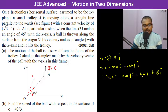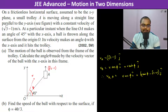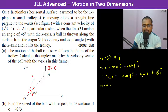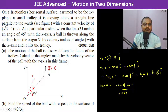The angle θ made by the velocity vector of the ball with the x-axis in this frame is given by: tan θ = (v·sinφ − (√3 − 1)) / (v·cosφ).